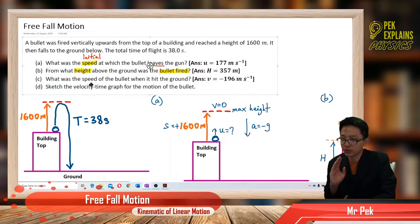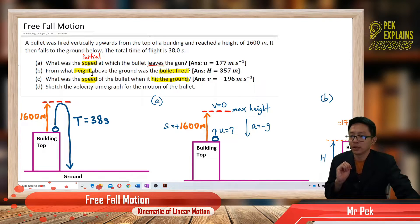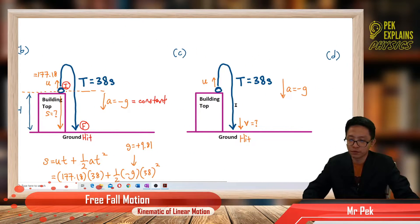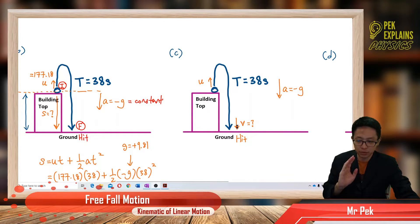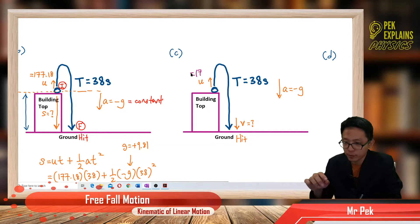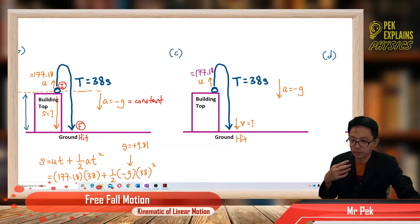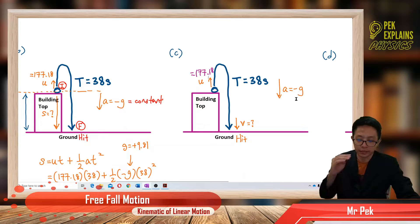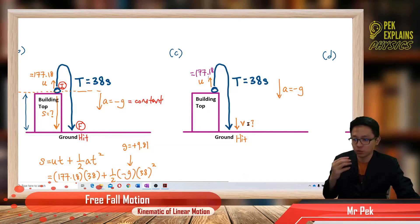Now let us do Part C: what was the speed of the bullet when it hit the ground? The speed of the bullet hitting the ground is the final speed. The information we have is: initial speed 177.18 m/s, total time taken 38 seconds, and acceleration is negative g (constant, acting downward). We have v, u, a, t — so the formula is v = u + at.